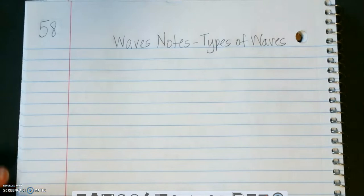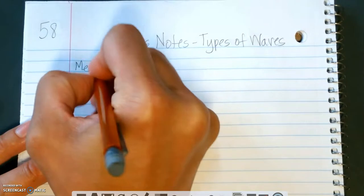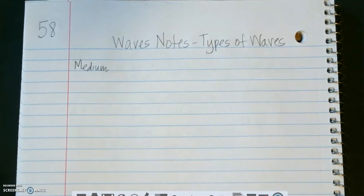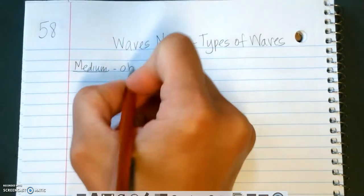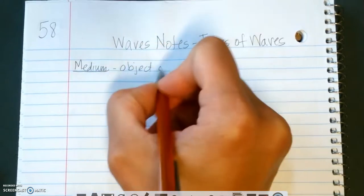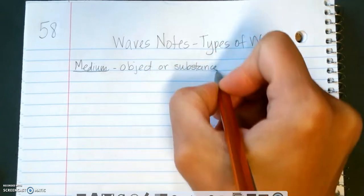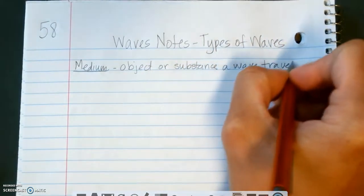So first thing is we're going to write a vocabulary word that we will need to know, and that is going to be medium. So if you've done your reading and your CK-12, you've probably heard the word medium multiple times used. So a medium is the object or substance a wave travels through.